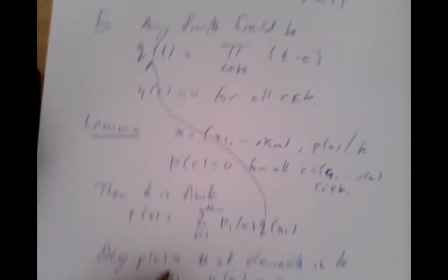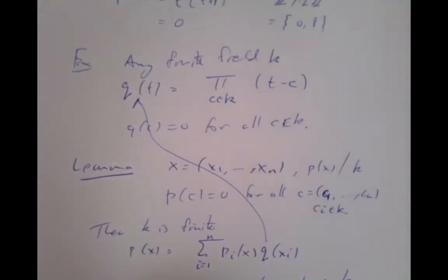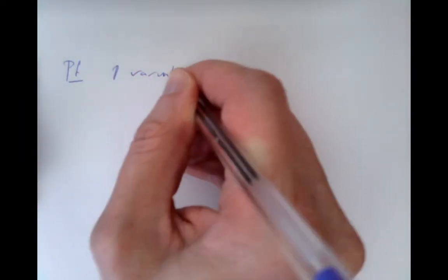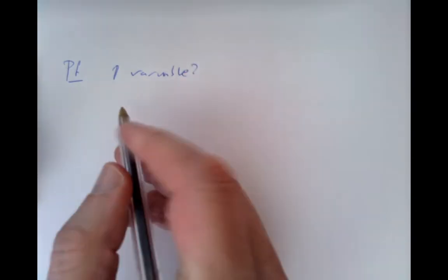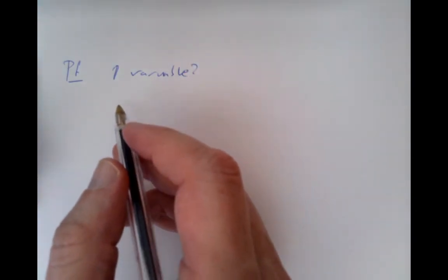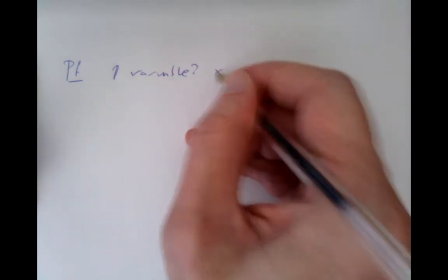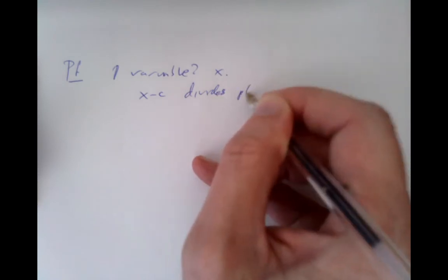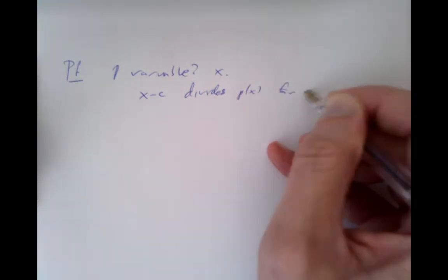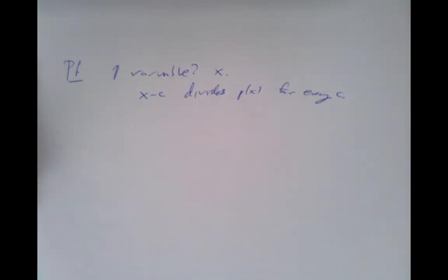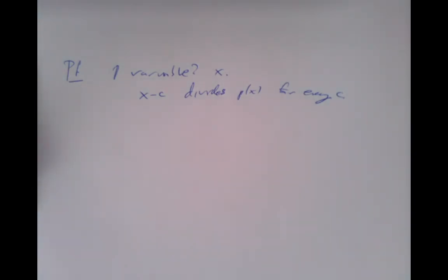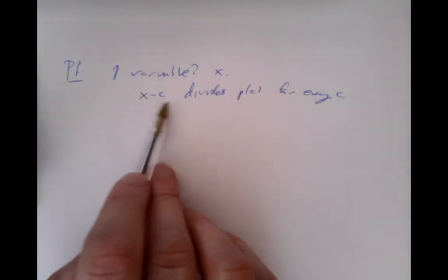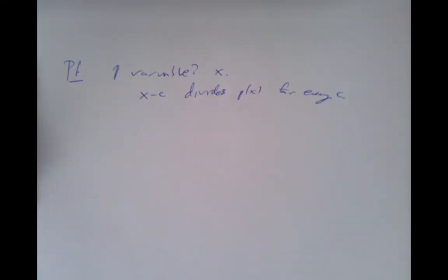The proof is very straightforward. We start by looking at the proof in one variable, then go to higher variables. In the one variable case, x minus c divides p of x for every c, so the product of all those also divides — the result is clear.